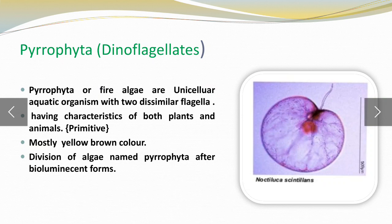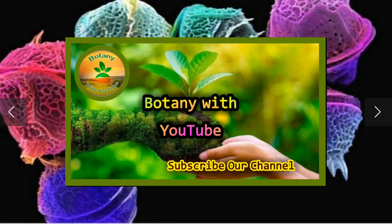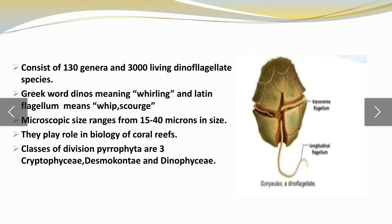They have characteristics of both plants and animals. Mostly yellow-brown color is present in their body. The division of algae is named Pyrophyta. It consists of 130 genera and 3,000 living dinoflagellate species. The Greek word 'dinos' means whirling and Latin 'flagella' means whip-like. Microscopic size ranges from 15 to 40 microns. They play an important role in the biology of coral reefs.